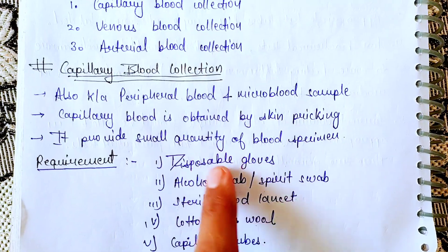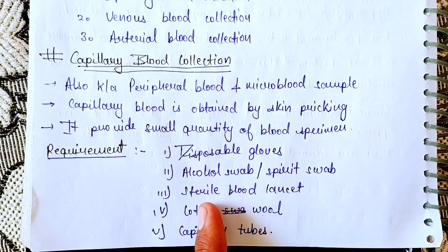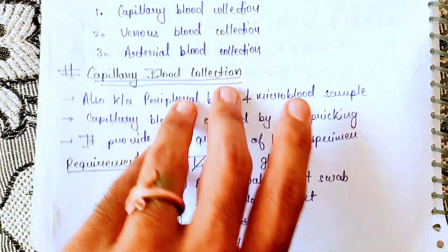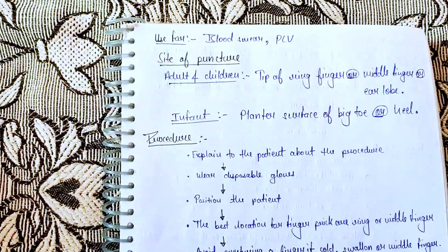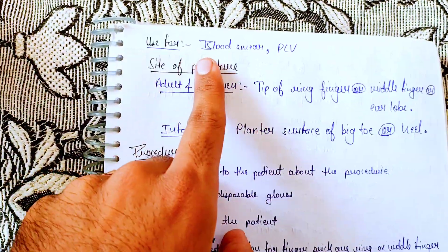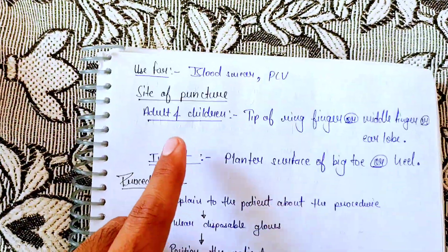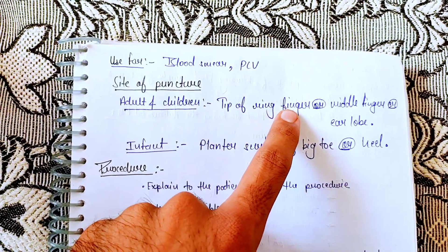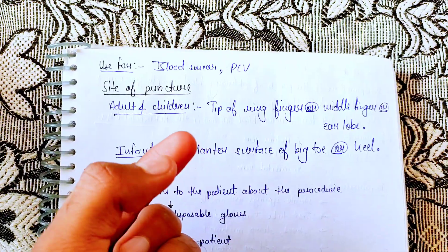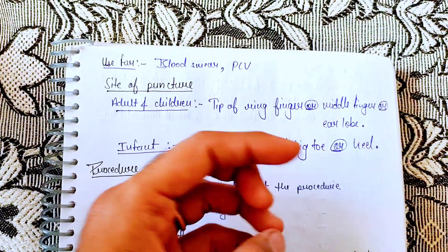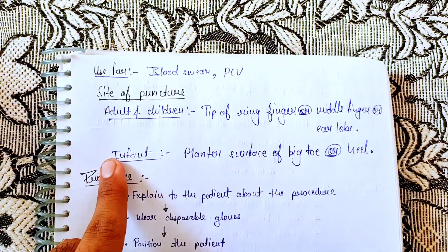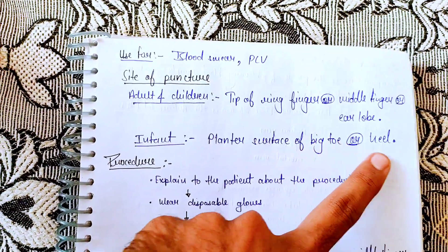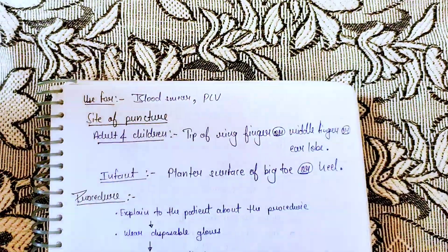Requirements for capillary blood collection include: disposable gloves, alcohol swab, sterile blood lancet, cotton wool, and capillary tubes. It is used for blood smears and PCV. The site of puncture for adults and children is the tip of the ring finger or middle finger, or the earlobe. For infants, the plantar surface, big toe, and heel are used.